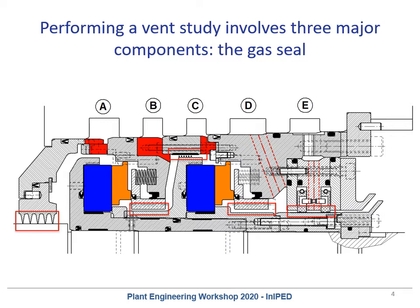The next big restriction to consider is the area underneath the carrier. This does not offer a terribly significant restriction, but it is the most restrictive bit of metalwork within the seal and should be considered. Customers sometimes ask about making that gap smaller, but this poses problems because the carrier itself must move axially along the shaft, and any close clearance can impede that motion and cause issues.